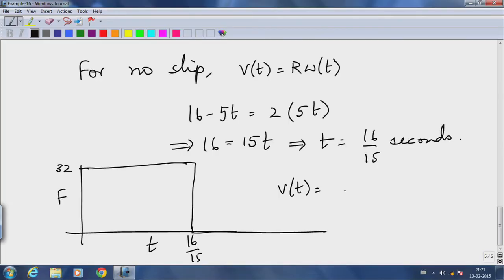As soon as the friction disappears this body has a velocity that is given by v of t at this time instant, which is 16 minus 5 times 16 over 15, that is 32 over 3 meters per second.